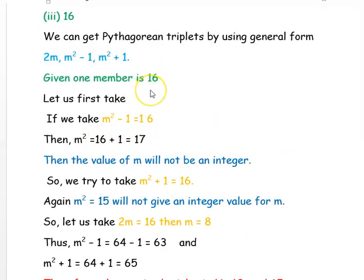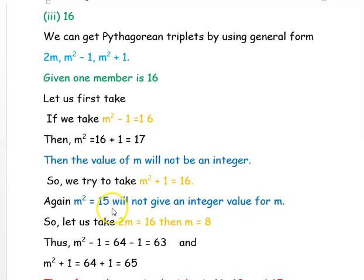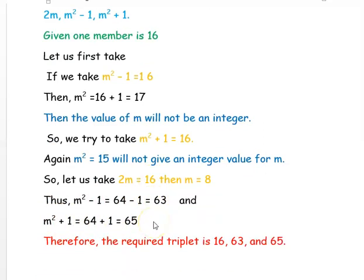For the number 16: taking M²−1 = 16 gives M² = 17, so M = √17 — not possible. Taking M²+1 = 16 gives M² = 15, so M = √15 — also not possible. So we take 2M = 16, giving M = 8. Then M²−1 = 64−1 = 63, and M²+1 = 64+1 = 65. Thus the three triplets are 16, 63, and 65.